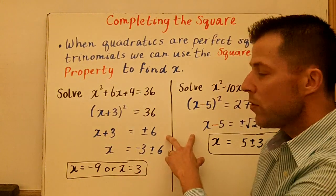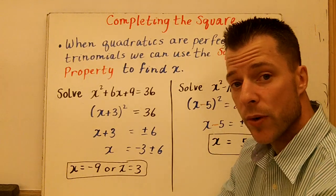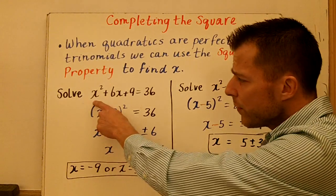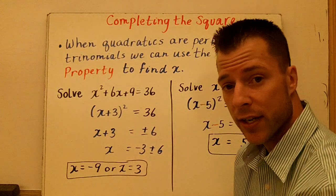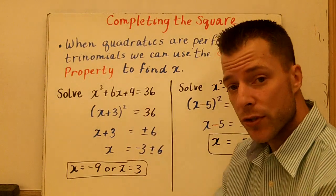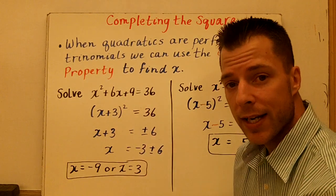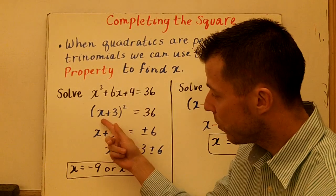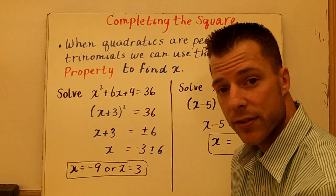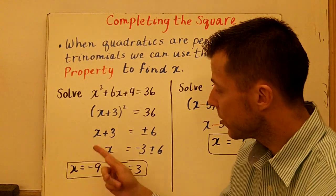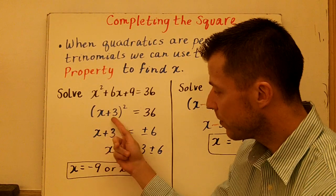These first two examples are perfect squares, and I'm just reviewing how to use the square root property. On the first one, you have to solve x squared plus 6x plus 9 equals 36. So the first thing you would try to do on the left is factor. Two numbers that multiply to be 9 and add to be 6 are 3. So we have the quantity x plus 3 squared, and that's going to be equal to 36. Now you solve for x — you're going to square root both sides, and that frees up the x plus 3.